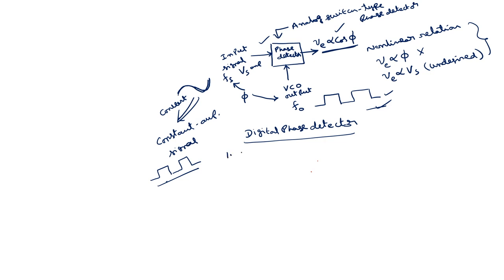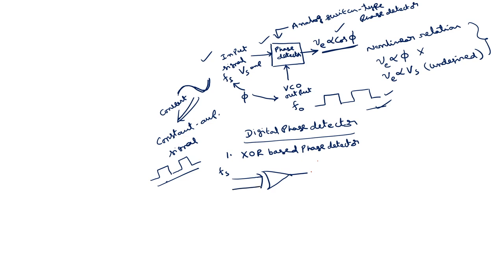The first digital phase detector is the exclusive-OR based phase detector. Simply, an exclusive-OR gate will act as a phase detector. If you give one signal with a frequency of Fs and another signal with the VCO output frequency F-naught, then this will generate Ve, the error signal.